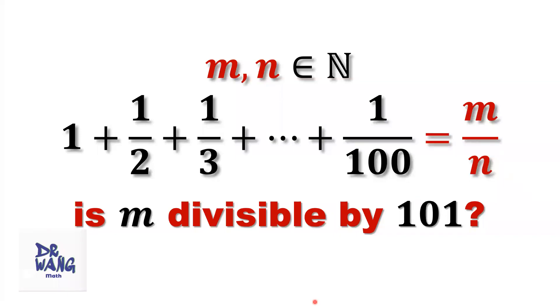Hello everyone, I'm Dr. N. Here I ask the question. If m and n are positive integers, 1 plus 1/2 plus 1/3 plus until plus 1/100 equals m/n, is m divisible by 101?